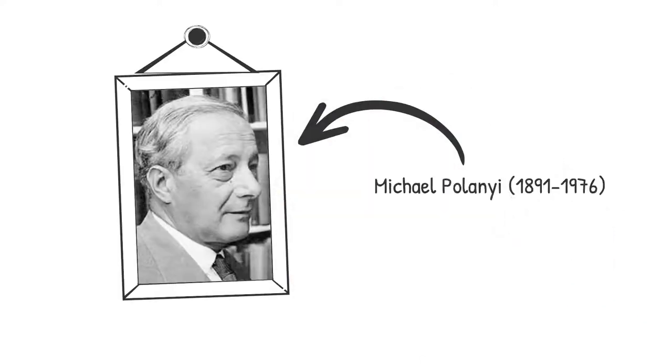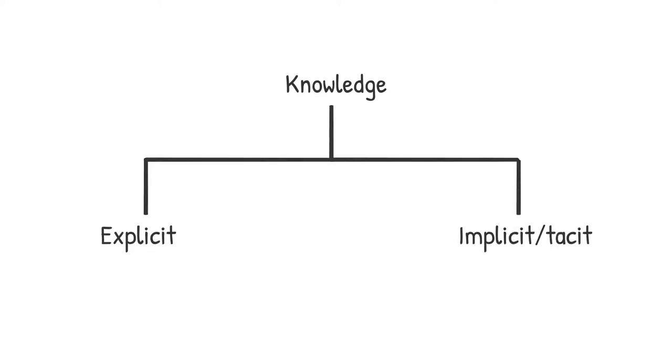This is Michael Polanyi. He was a Hungarian philosopher and sociologist and he dealt exactly with this question. He recognized that knowledge is not knowledge in itself, but divided it into so-called explicit knowledge and implicit or tacit knowledge.